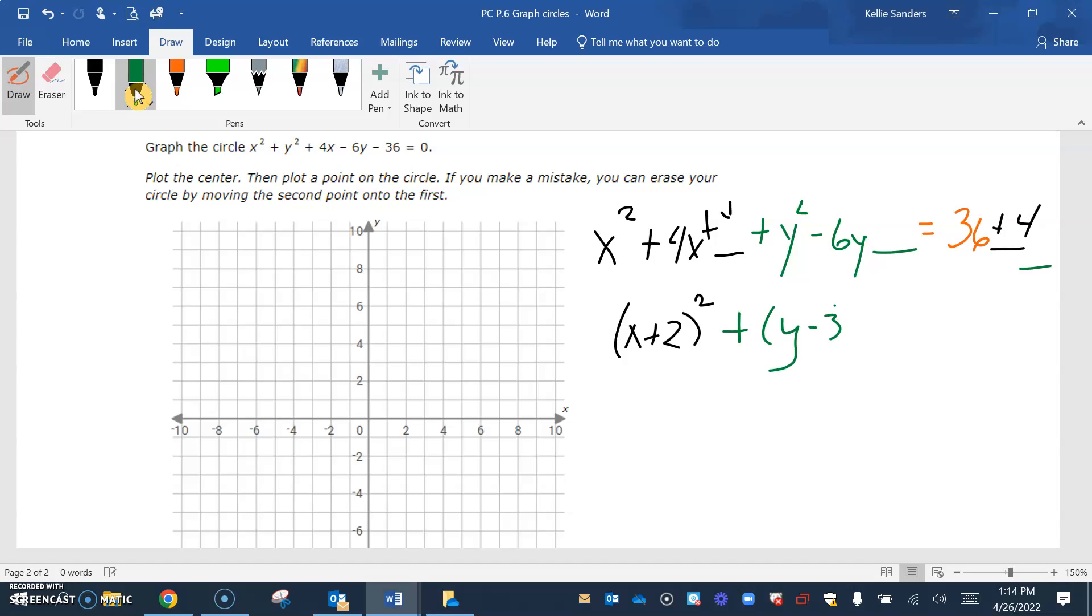Half of negative 6 is negative 3 squared, which is 9. 4 and 9 and 36 is 49. So our center is at (-2, 3) and our radius is 7.